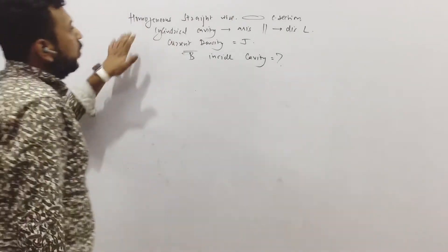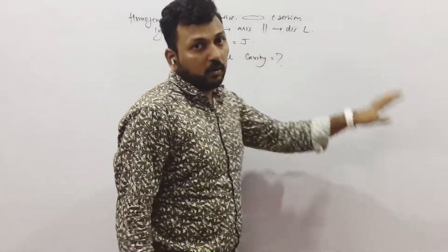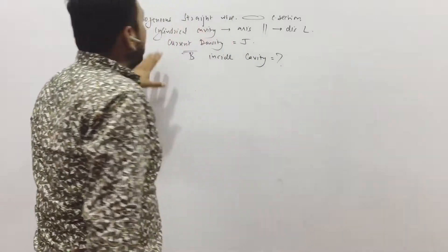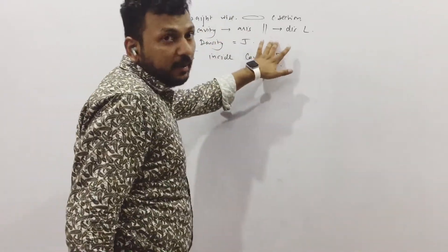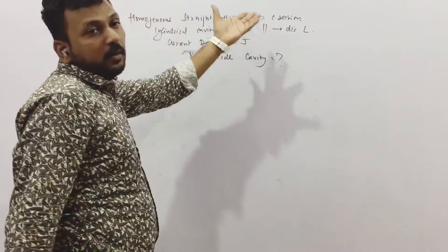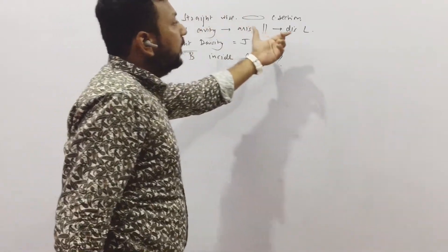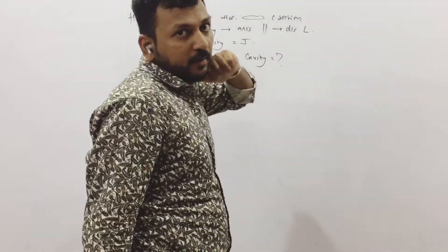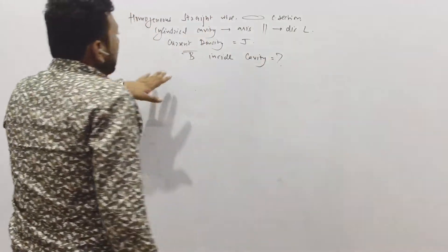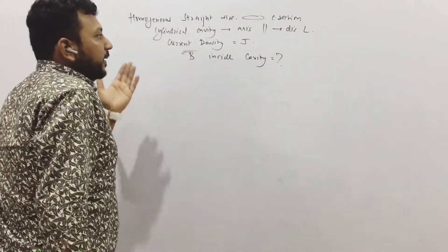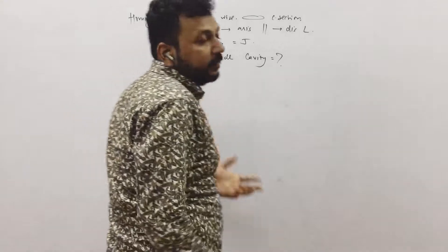The question goes like this. There is a homogeneous straight wire of circular cross section and there is a cylindrical cavity inside this whose axis is parallel to the axis of the straight wire and the axis is at a distance of L from the main cylinder. The current density inside the whole cylinder is J. We need to find the magnitude inside the cavity.